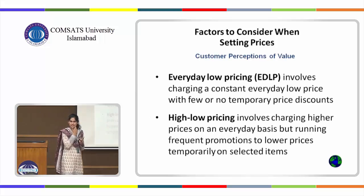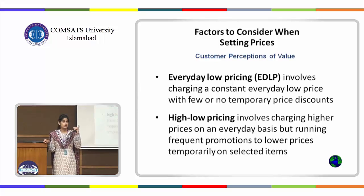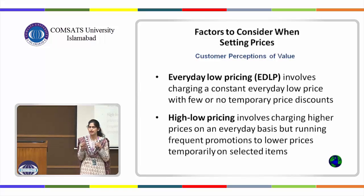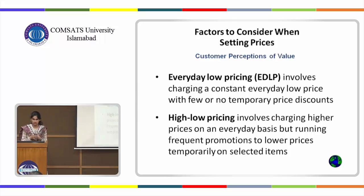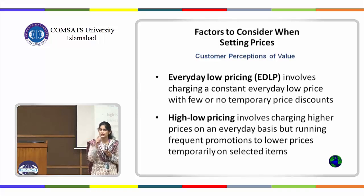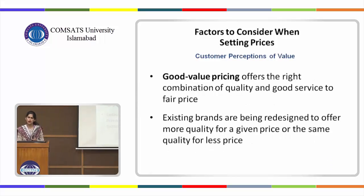There are two types of good value pricing: EDLP (everyday low pricing) and high-low pricing. Everyday low pricing is what you generally see in grocery stores — Walmart, which is the king of EDLP, Carrefour, Metro Cash and Carry — they say 'we offer the lowest prices.' In high-low pricing, things that are initially at a high price go on low price for some time. But in EDLP, things remain at a low price throughout the year — that's the promise of the brand.